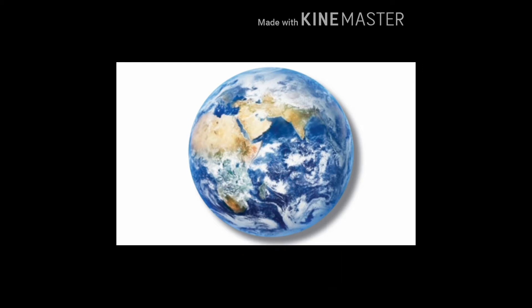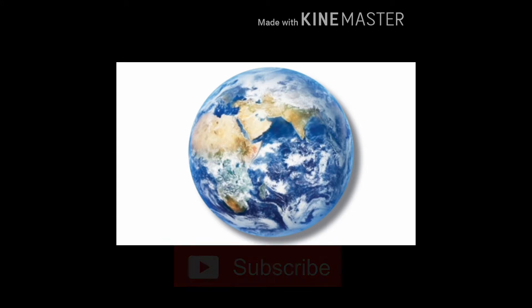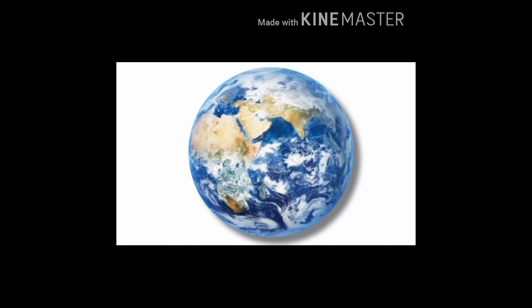The earth is the third planet from the sun and the fifth largest in the solar system. It is about 150 million km away from the sun. The earth is called the blue planet.